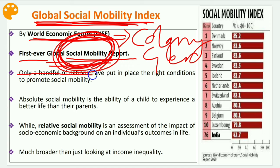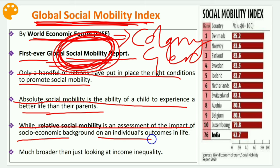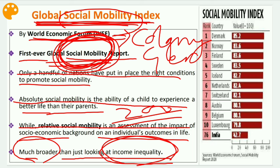Only a handful of nations have put in place the right conditions to promote social mobility. Absolute social mobility is the ability of a child to experience a better life than their parents, while relative social mobility is an assessment of the impact of socioeconomic background on an individual's outcomes in life. This social mobility concept is much broader than just looking at income inequality, where you are simply comparing incomes.